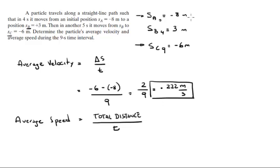Now the total distance traveled: from negative 8 to 3, you traveled 11 meters. From 3 to negative 6, you traveled 9 meters.